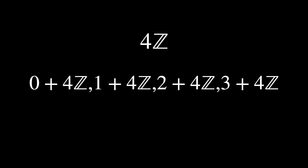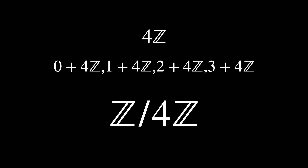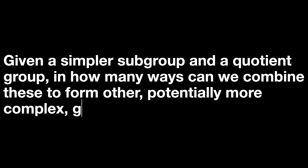Normal subgroups are crucial because they allow the group to be broken down into simpler components known as quotient groups. A quotient group is formed by taking all the cosets of a normal subgroup and treating each coset as a single element in a new group. This curiosity about construction gives rise to the extension problem in group theory, which asks: given a simpler subgroup and a quotient group, in how many ways can we combine these to form other, potentially more complex groups? This is currently a significant and unsolved problem in mathematics.